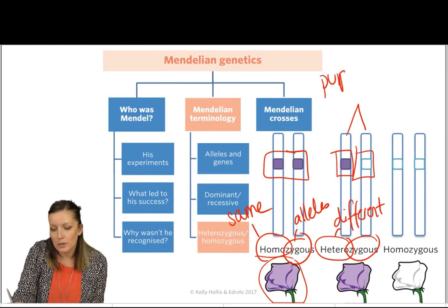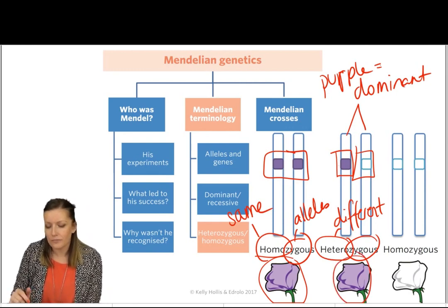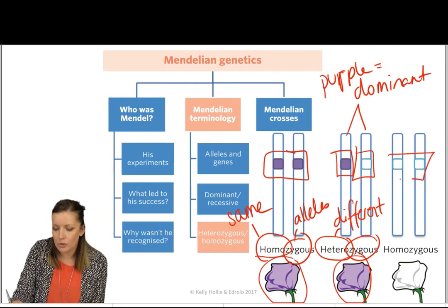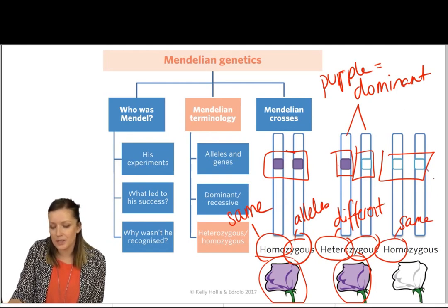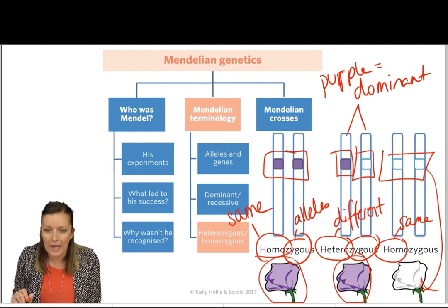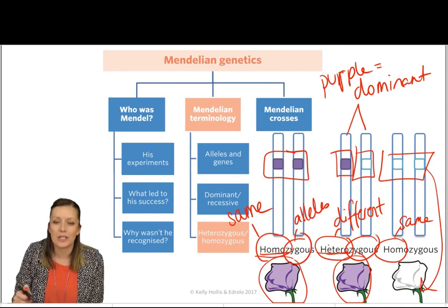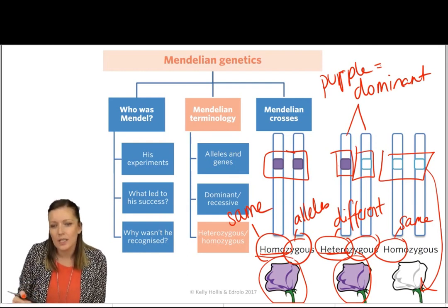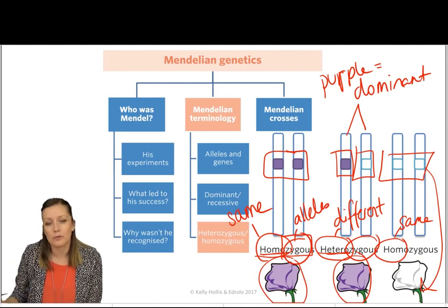In the last example, we have two white alleles — again homozygous, meaning the same. Because the dominant allele isn't present, we end up with the recessive trait, which is white. Homo and hetero are two terms that come up quite a bit in science: homo simply means the same and hetero means different. The zygous part of the word refers to the alleles.